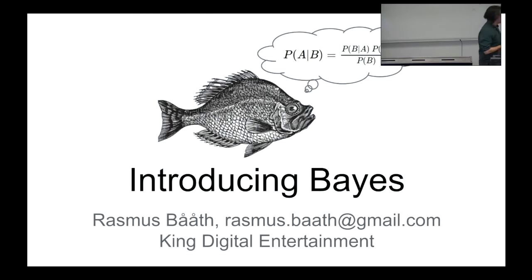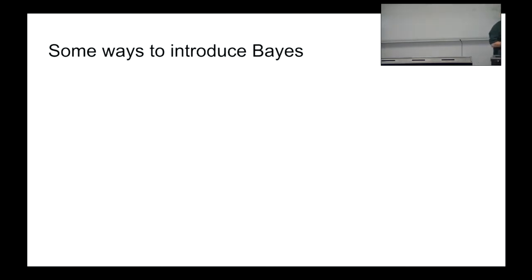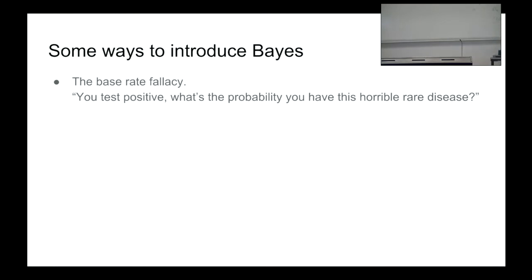There are many different ways to introduce Bayes. One I don't particularly like, but often seen in statistics textbooks, is the base rate fallacy. You're going to the doctor, you test positive — what's the probability you have the disease? The test is very good, so most people think they probably have the disease, but that's often wrong if the disease is very rare. Using Bayes' rule you can calculate this and realize you probably don't have the disease.